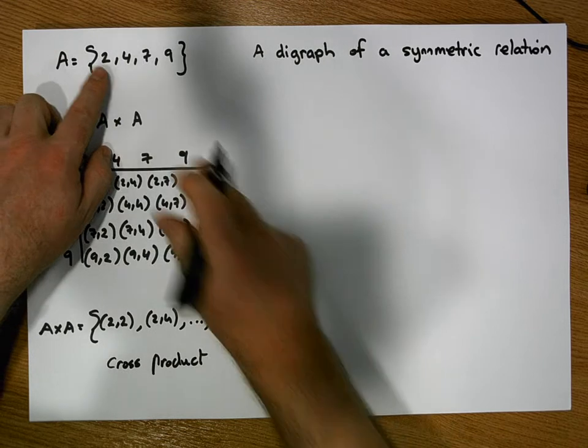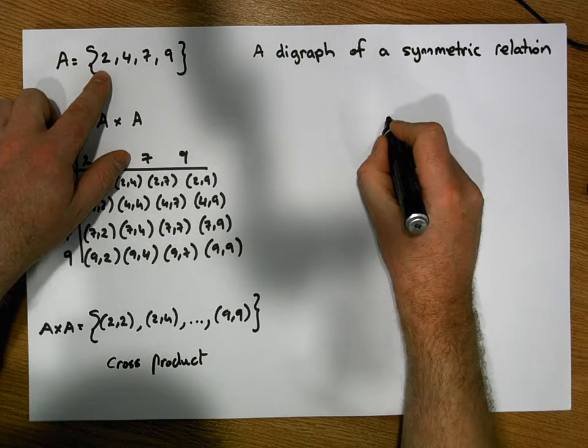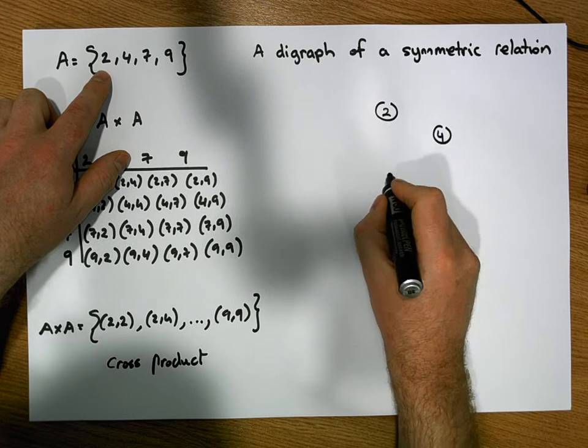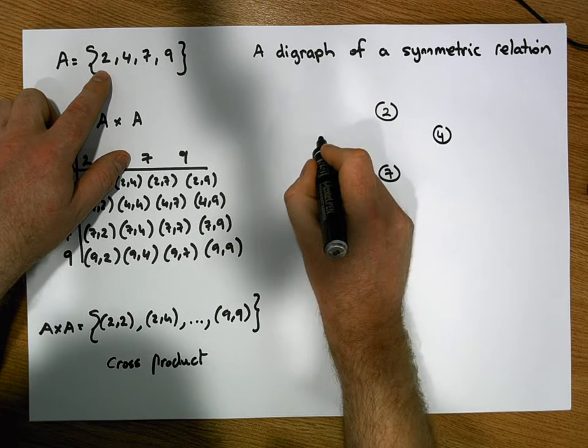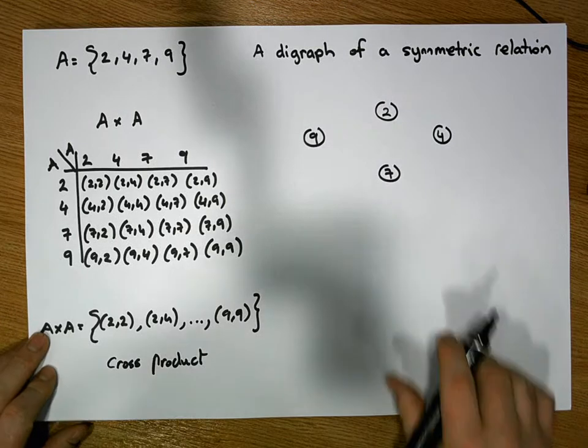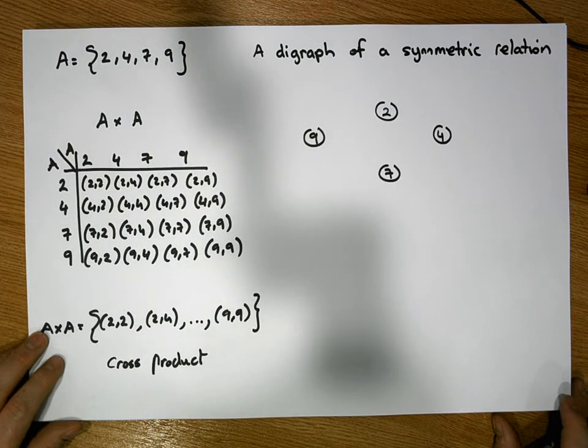And then let's construct what a symmetric relation looks like. So the elements of A are 2, 4, 7, and 9. And what we want to do is we want to construct a symmetric relation.